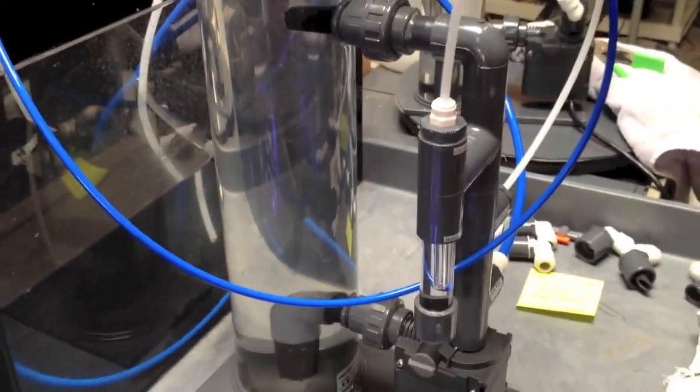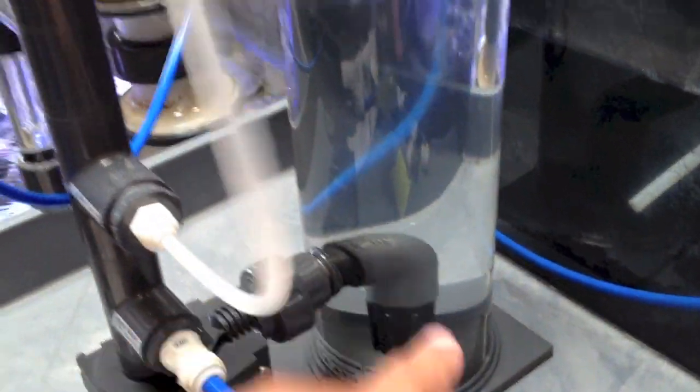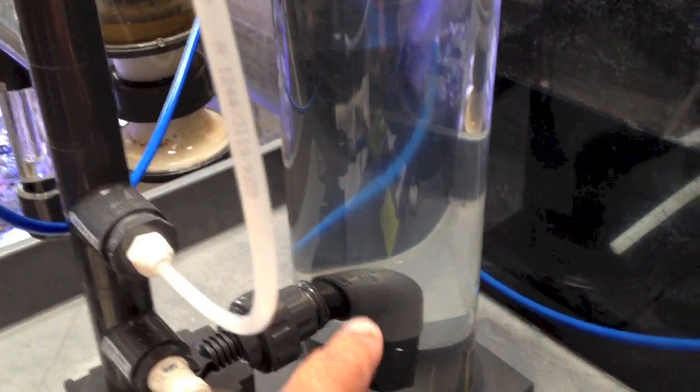So once the recirculating loop is intact and configured, and the gas is introduced, as the bubbles rise up through the media, of course, they're going to acidify the water, and the media will start to dissolve.